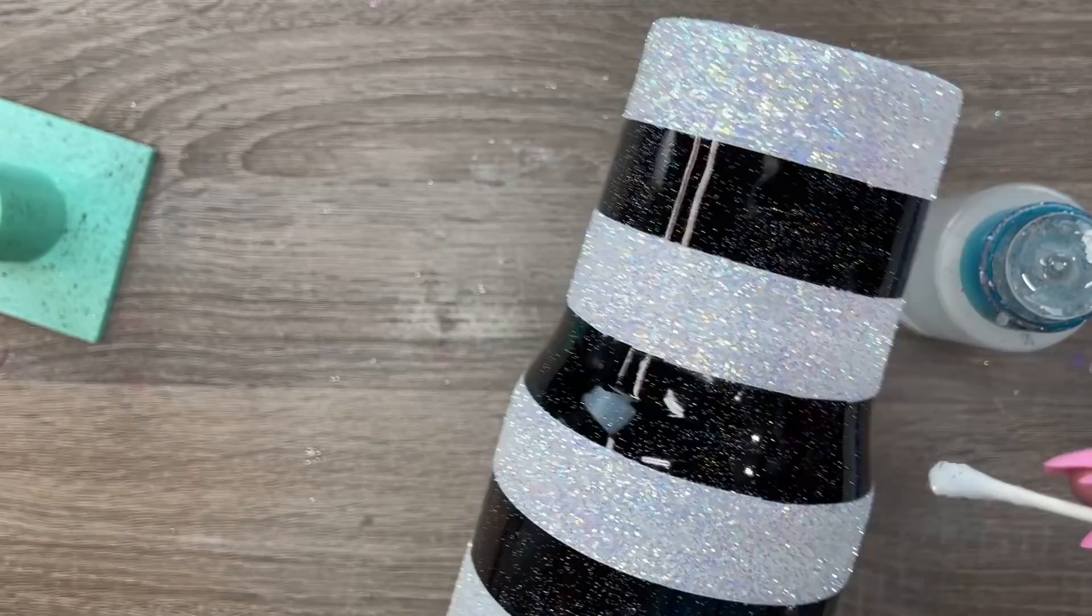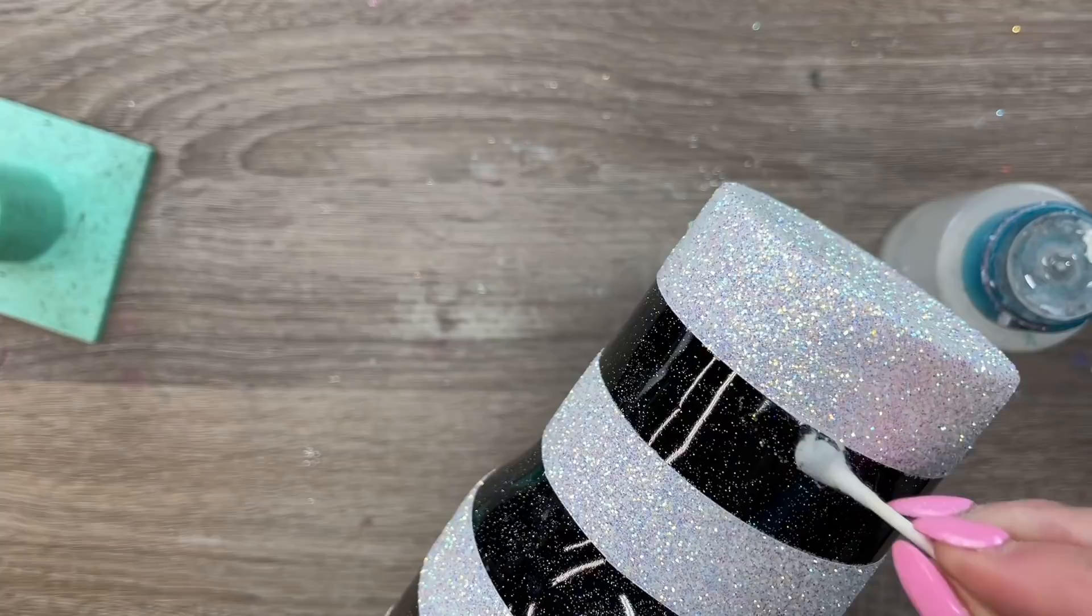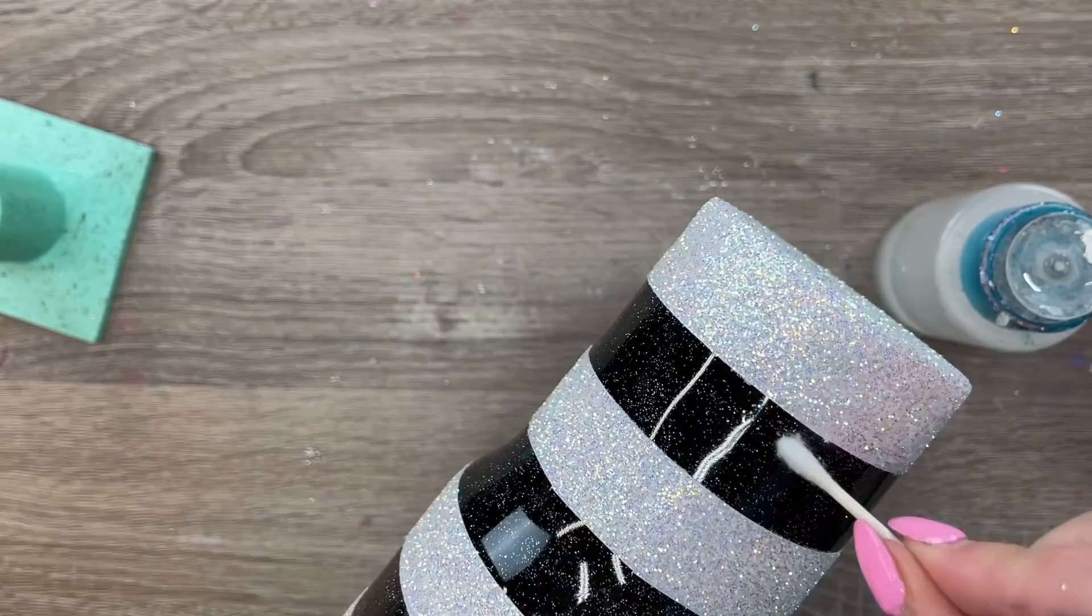Especially here around the curve, I got some rippling in my tape or some white paint sort of leaked through, so I'm just going to clean that up really quick. Then we're going to tap off all that excess glitter really well with some scissors.